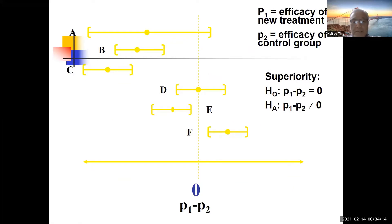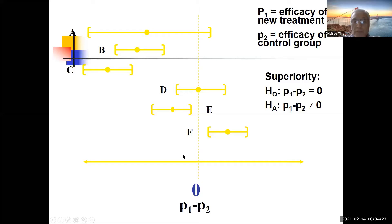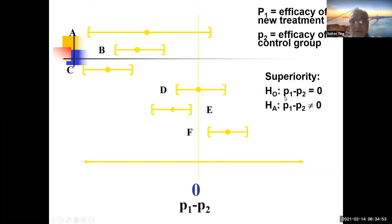Analysis compares the two arms with respect to response. If you look at this graph, P1 is the efficacy of the new treatment and P2 is the efficacy of the control group. In a superiority trial, if positive is good, you're looking to the right. A result can be statistically superior, statistically significantly inferior, or you may accept the null hypothesis of no difference.